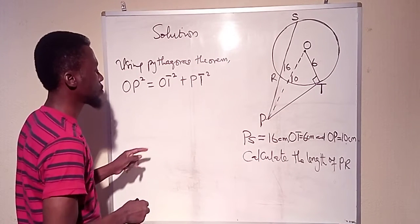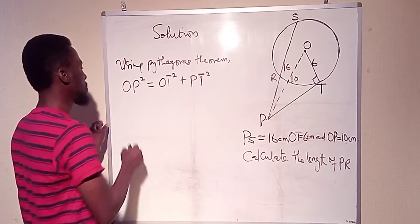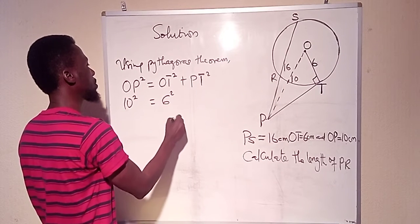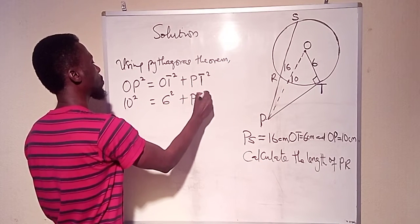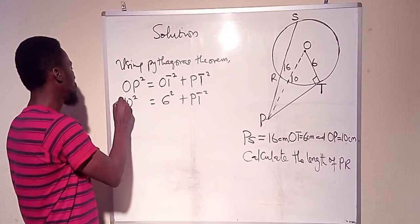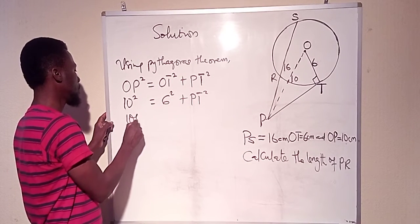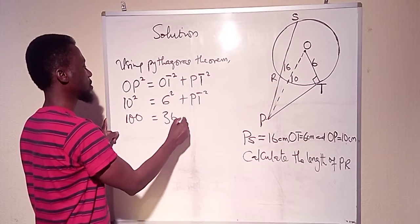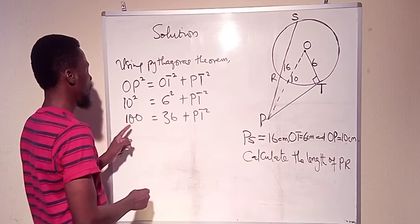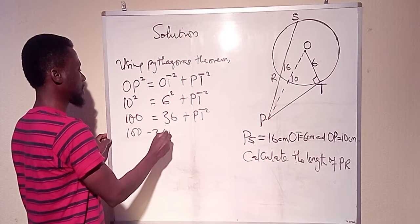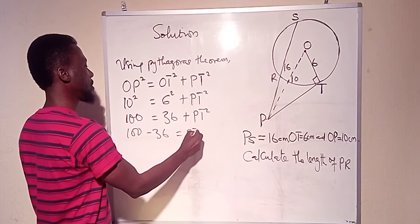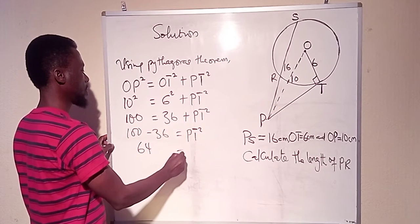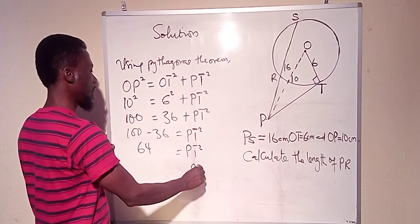Substituting the values: OP is 10 centimeters, so we put 10 squared, which equals 100. OT is 6 centimeters, so that is 6 squared which is 36, plus PT squared. Therefore, 100 minus 36 is equal to PT squared, giving us 64 equals PT squared.